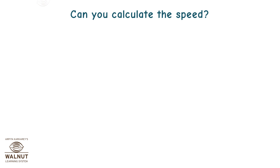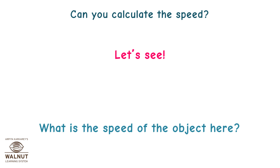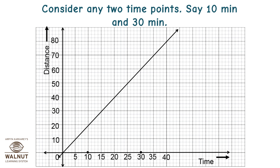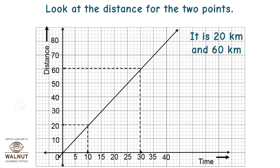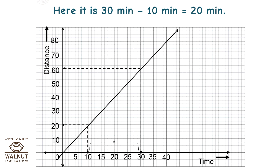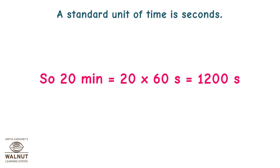Can you calculate the speed? Let's see. Consider any two time points, say 10 minutes and 30 minutes. Look at the distance for the two points — it is 20 kilometers and 60 kilometers. Speed is equal to distance upon time. Look at the time passed between these points: 30 minutes minus 10 minutes equals 20 minutes. A standard unit of time is seconds, so 20 minutes equals 20 multiplied by 60 seconds, which is 1,200 seconds.